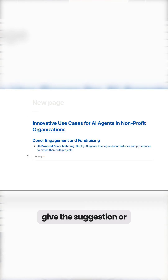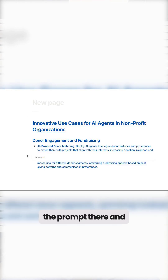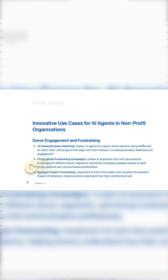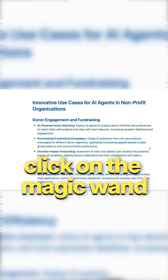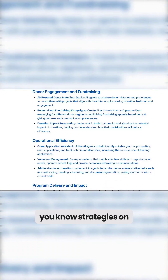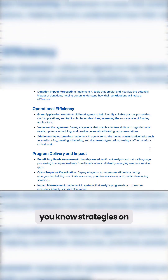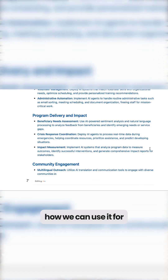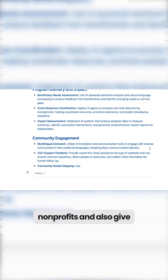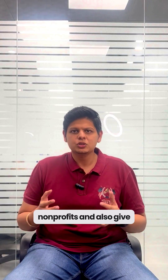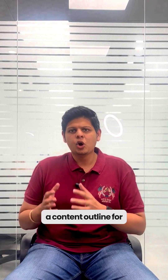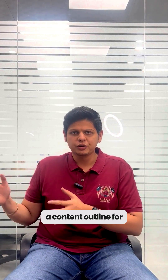Let's take an example. Suppose you want to brainstorm on how non-profits can use AI — we just need to give the prompt there and click on the magic wand. It starts putting out ideas and strategies on how we can use it for non-profits, and also gives a content outline for you.